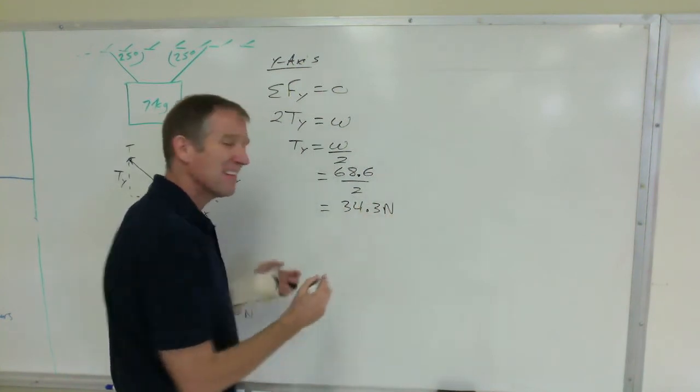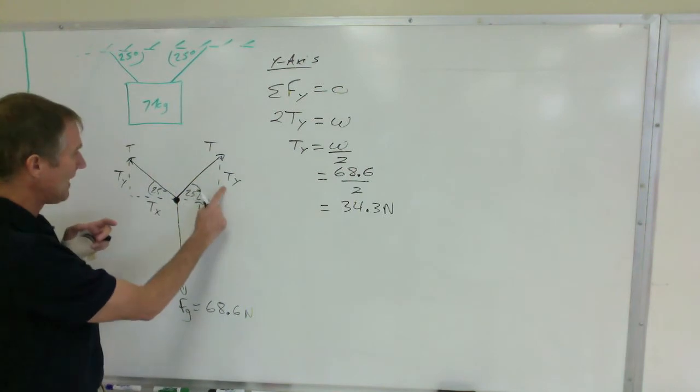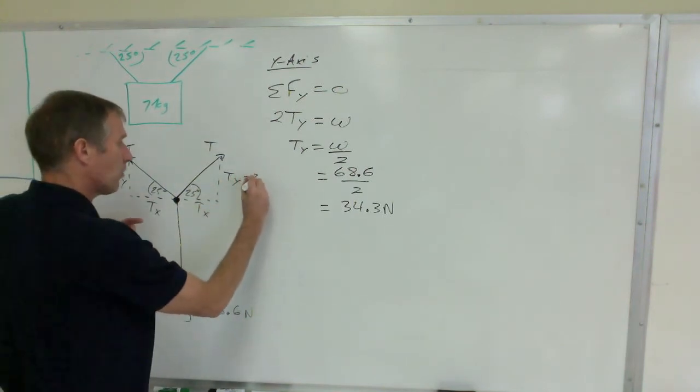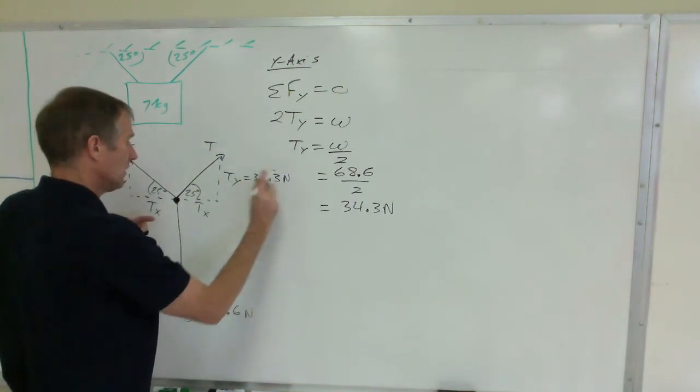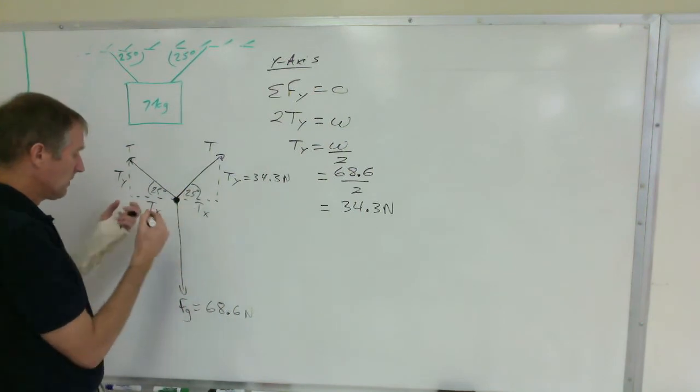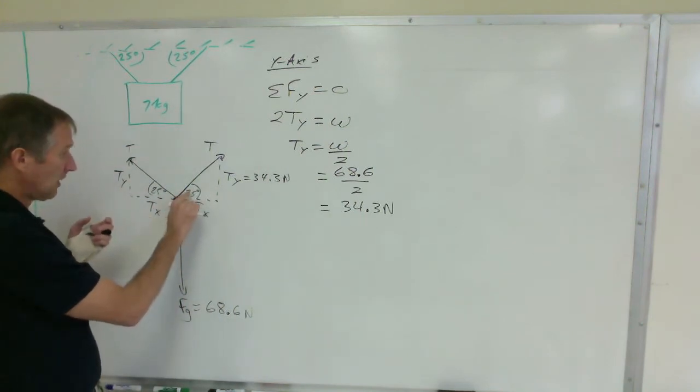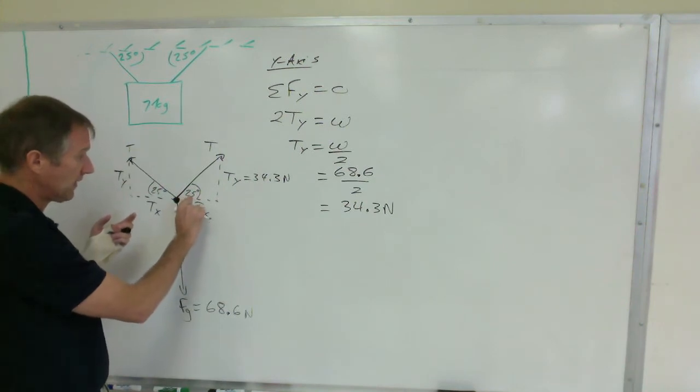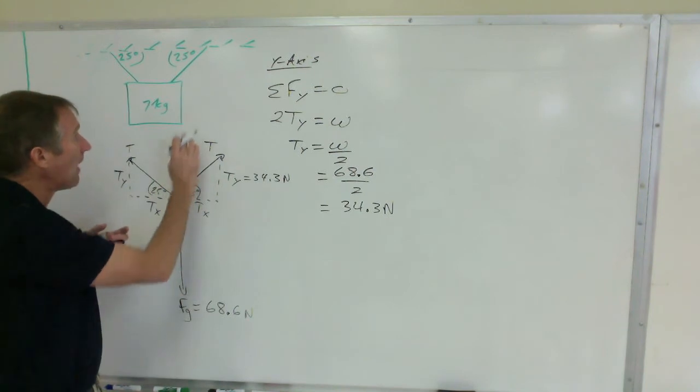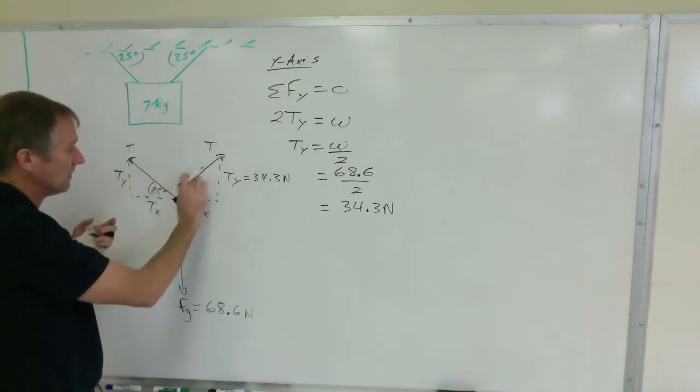That's not the answer, it's not the final answer, it's only the value of that. So if this is 34.3 Newtons and that's 25 degrees, I'm going to use sine because that's opposite the angle. Sine of 25 is the opposite side over the hypotenuse. I want to know the value of the hypotenuse.